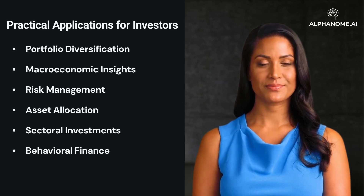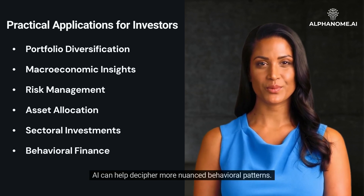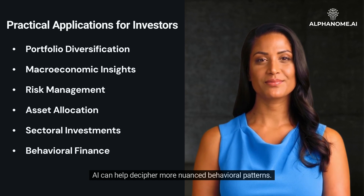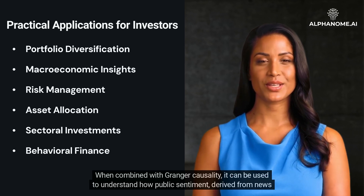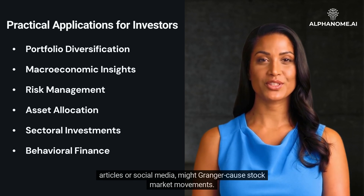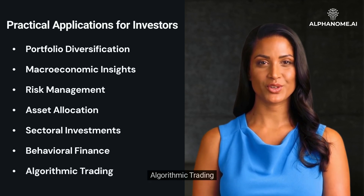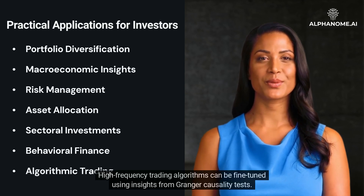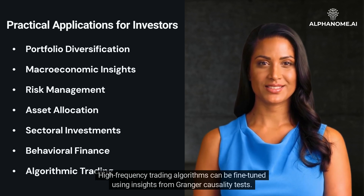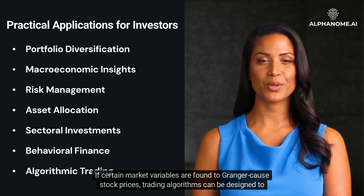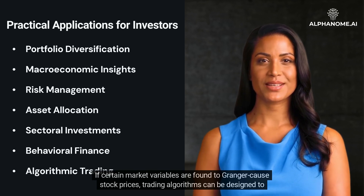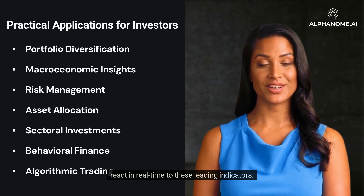Behavioral Finance: AI can help decipher more nuanced behavioral patterns. When combined with Granger Causality, it can be used to understand how public sentiment, derived from news articles or social media, might Granger-cause stock market movements. Algorithmic Trading: High-frequency trading algorithms can be fine-tuned using insights from Granger Causality tests. If certain market variables are found to Granger-cause stock prices, trading algorithms can be designed to react in real-time to these leading indicators.